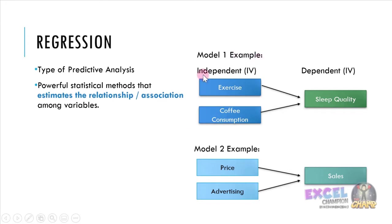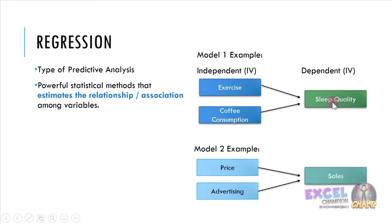On the left side, we call it the independent variable because it stands independently, while on the right side is the dependent variable because this variable depends on the independent variable. For example, sleep quality depends on either exercise or coffee consumption, while sales depends on either price or advertising.